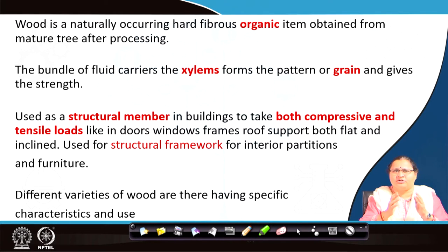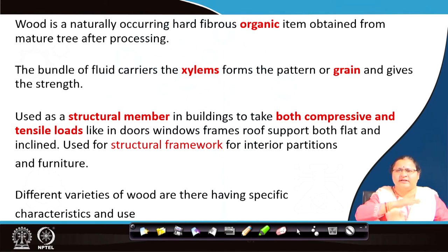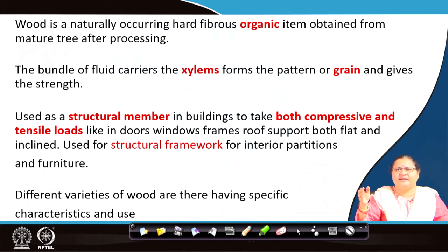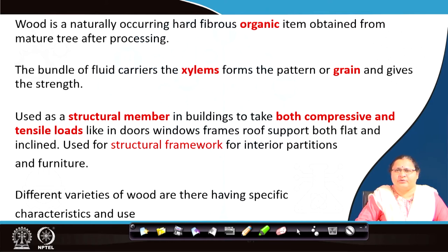Wood can take both compression when subjected to load from the top, as well as tension — if you allow it to span resting between two support walls and allow any kind of movement on top of it. The bundles inside, which are continuous, help in taking the tensile load. So wood can be used as a spanning material and as a compressive material. It can be used as a structural framework for making partition walls, where the infill may be made of plywood, which is again another processed wood.